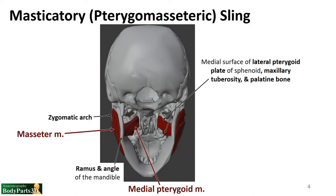The masseter and the medial pterygoid share that inferior attachment point along the angle and ramus of the mandible — the masseter on the lateral surface and the medial pterygoid on the medial surface. The masseter's superior attachment is on the zygomatic arch. The medial pterygoid attaches to the medial surface of the lateral pterygoid plate, the maxillary tuberosity, and parts of the palatine bone. Oriented in parallel, they form this sling around the mandible.